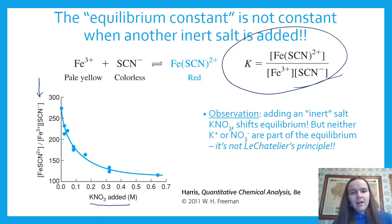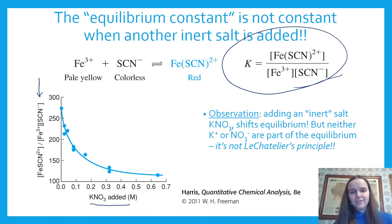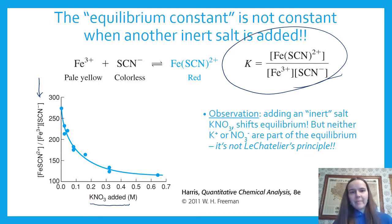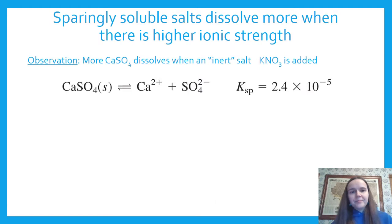You have less of the product iron thiocyanate as you increase the amount of salt. That doesn't make sense at first glance because neither K⁺ nor NO₃⁻ from the potassium nitrate are actually part of this equilibrium reaction — so it's not a Le Chatelier principle effect. So what could it be?